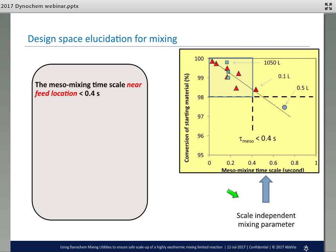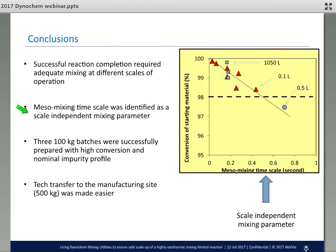With this we can now elucidate a design space for mixing. The passing criterion for reaction completion was to be at least 98%. This plot tells me that if I need at least 98% reaction conversion, my mesomixing timescale can be at most 0.4 seconds — it has to be less than 0.4 seconds. Based on the analysis, this system was not micromixing limited, which means that power per unit volume would not have been the right scale-up parameter. The mesomixing timescale is the right scale-up parameter for this reaction.